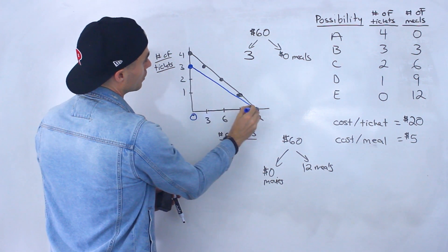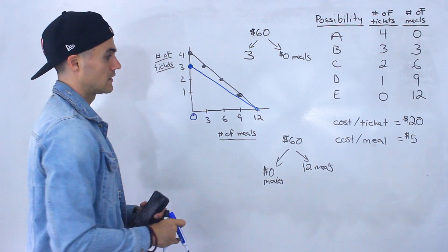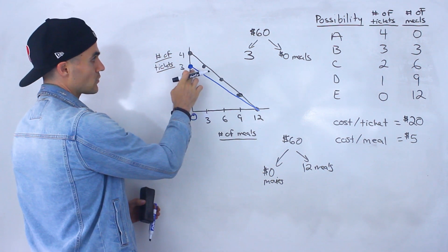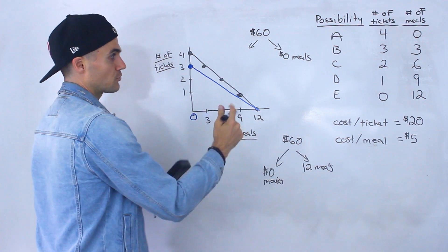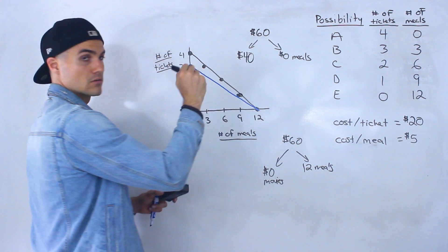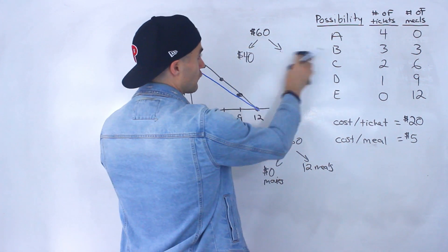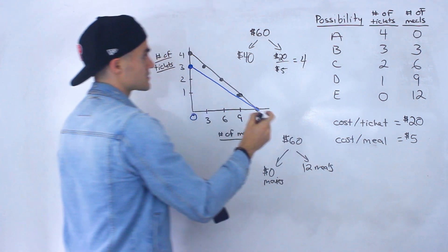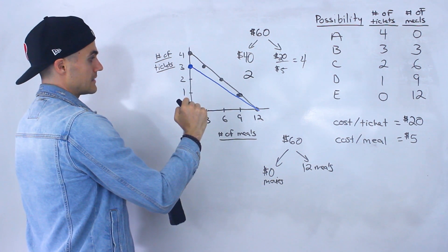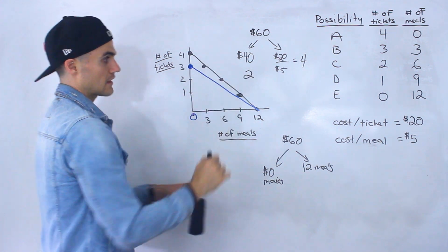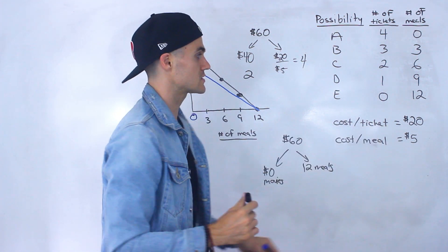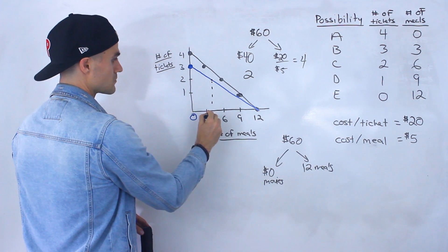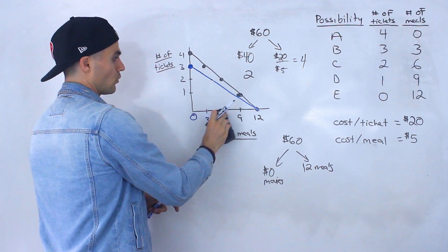You don't have to figure out all of the combinations in between, but you can make another table. Let's say instead of three movie tickets, what if we bought two movie tickets at this new price? We'd be spending $40 on movies, leaving $20 for meals. Each meal costs $5, so we'd be able to buy four meals. Two movie tickets and four meals is a combination we can do with $60 and this new ticket price — that would be the point (2, 4).